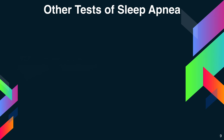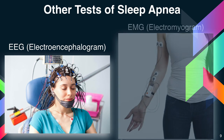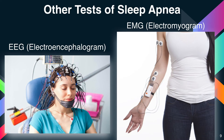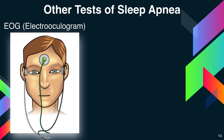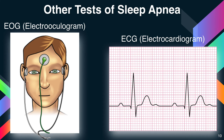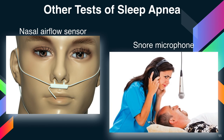Other tests used include: EEG (electroencephalogram) to measure and record brain wave activity; EMG (electromyogram) to record muscle activity such as face twitches, teeth grinding, and leg movements, and to determine the presence of REM sleep; EOG (electrooculogram) to record eye movements, which are important in determining different sleep stages, particularly REM sleep; ECG to record heart rate and rhythm; a nasal airflow sensor to record airflow; and a snore microphone to record snoring activity.